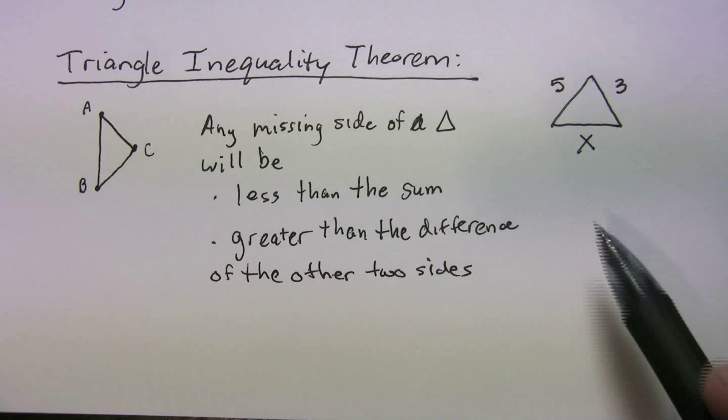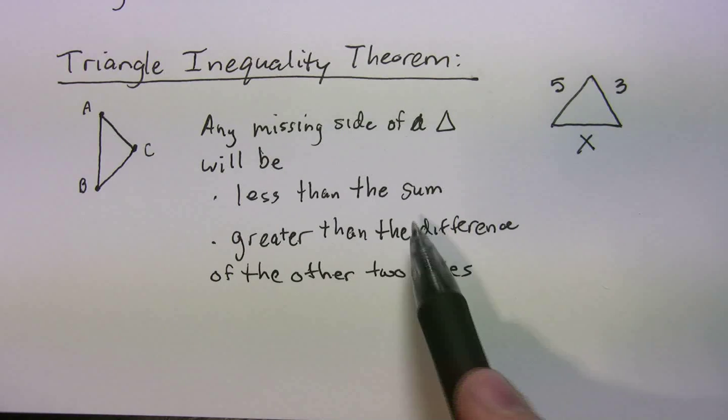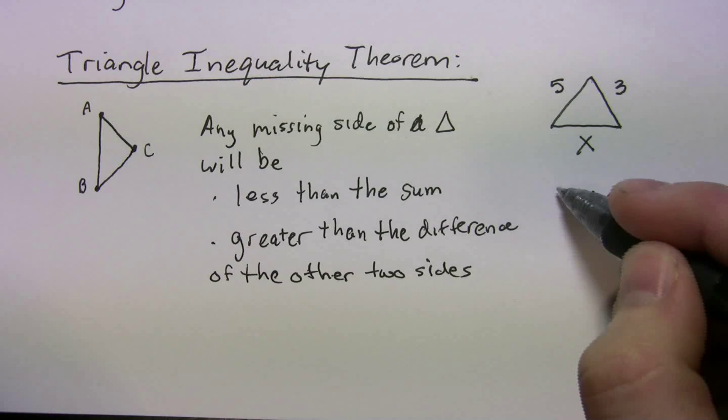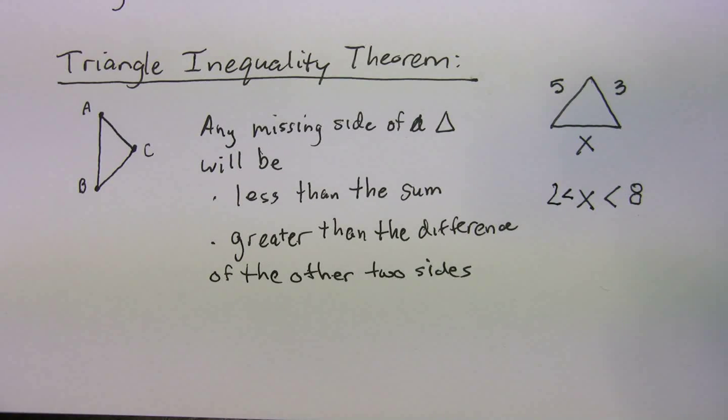Well, you know this missing side, right, less than the sum. So x is going to be less than 8, right? Less than the sum of the other two sides, and it's going to be greater than 2, greater than the difference.